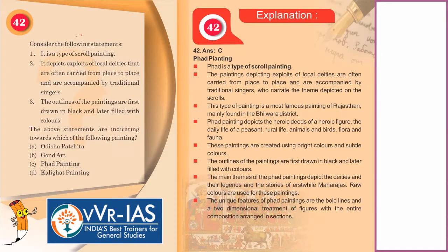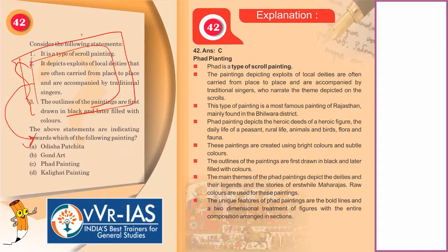Moving on to the 42nd question. Consider the following statements — this question gives the description of a certain type of painting and from three statements you are supposed to identify which art form it refers to. The statements are: it is a type of scroll painting; it depicts the exploits of local deities and is often carried from place to place accompanied by traditional singers; and the outlines of the paintings are first drawn in black and later filled with colors. The options include Odisha Pattachitra, Gond art, Phad painting, and Kalighat painting.